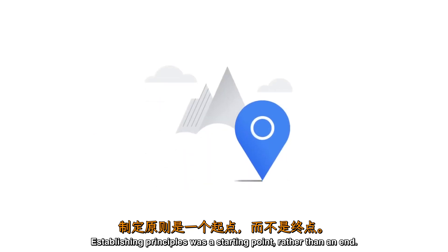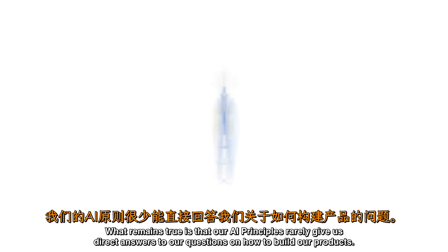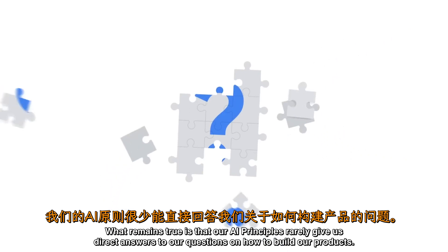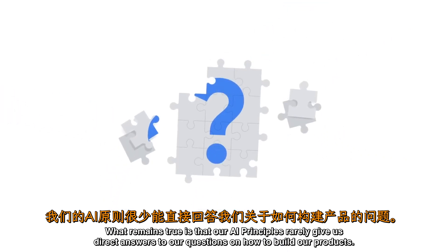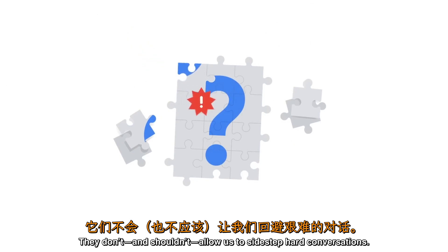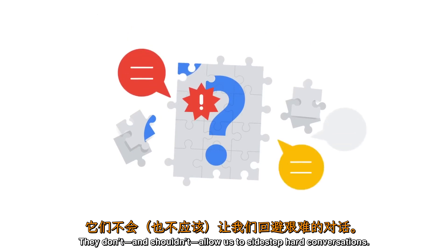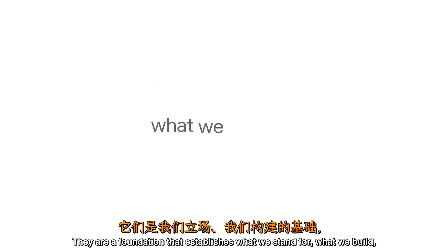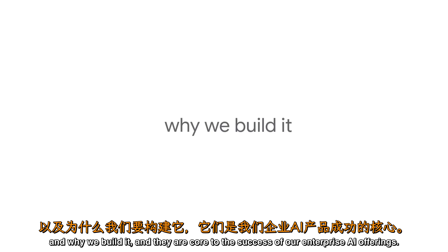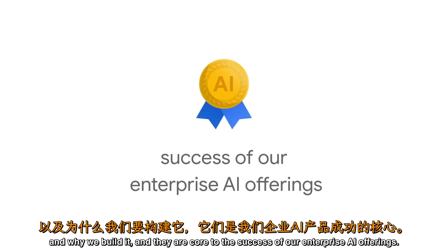Establishing principles was a starting point, rather than an end. What remains true is that our AI principles rarely give us direct answers to our questions on how to build our products. They don't, and shouldn't, allow us to sidestep hard conversations. They are a foundation that establishes what we stand for, what we build, and why we build it — and they are core to the success of our enterprise AI offerings.